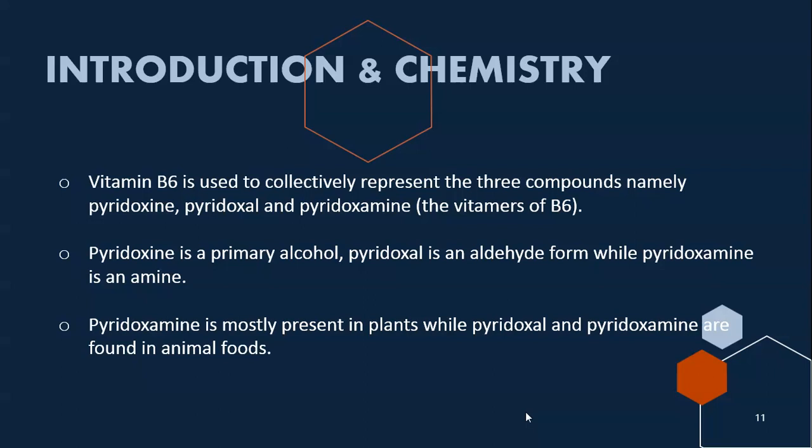The three compounds are pyridoxine, pyridoxal, and pyridoxamine. Notice the suffixes: pyridoxine has the suffix '-ine', pyridoxal has '-al', and pyridoxamine has '-amine'. Pyridoxine is a primary alcohol, pyridoxal is an aldehyde, while pyridoxamine is an amine. Pyridoxamine is mostly present in plants, while pyridoxal and pyridoxamine are found in animal food.